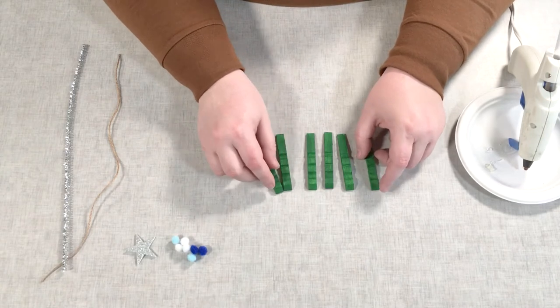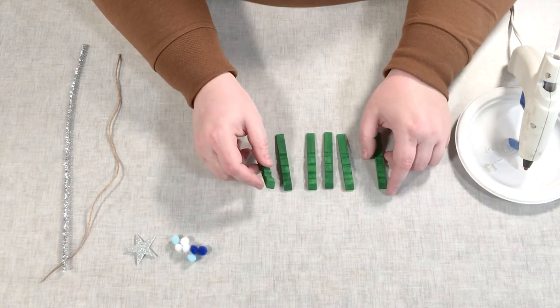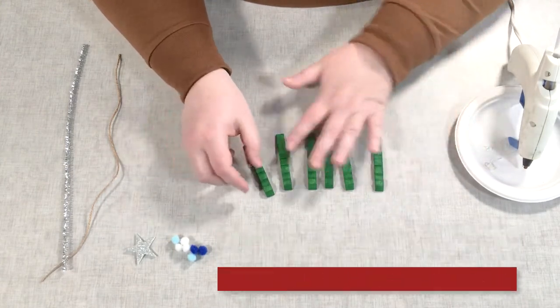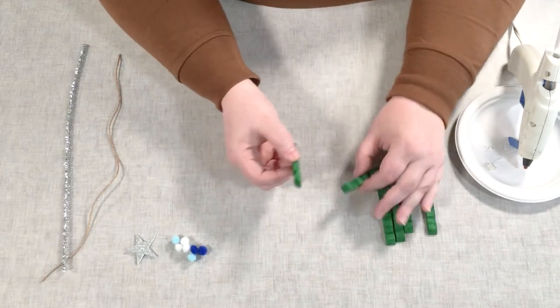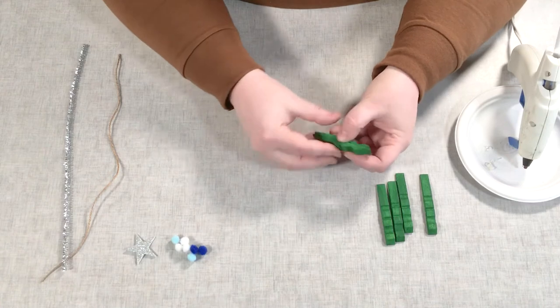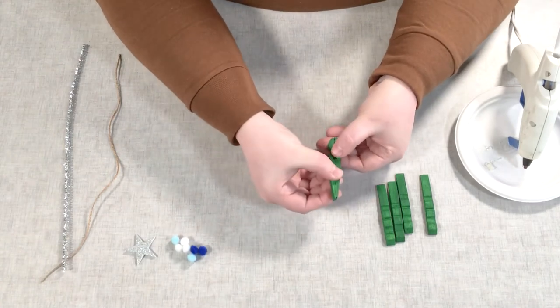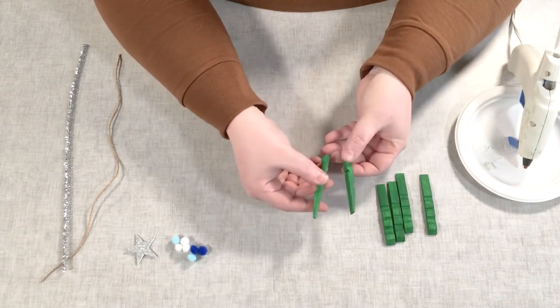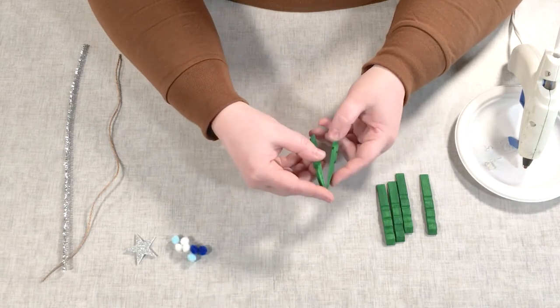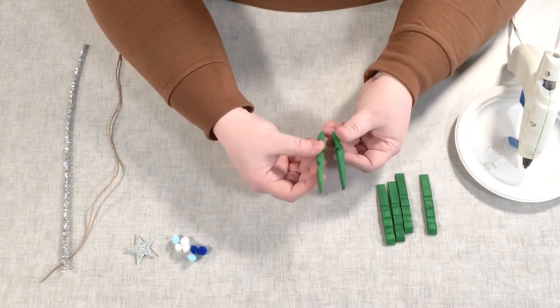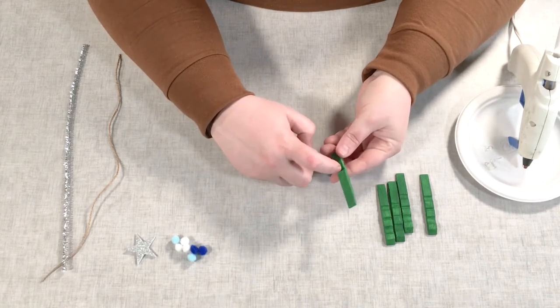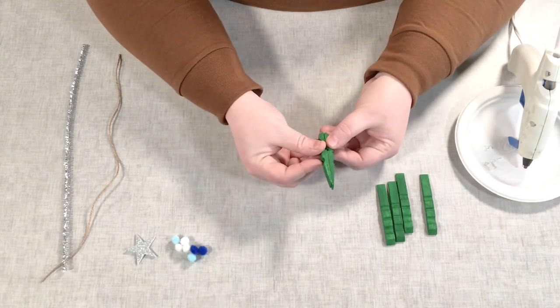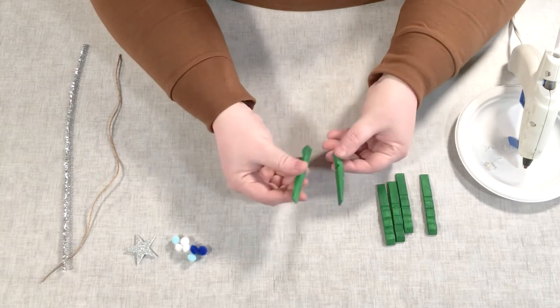Once you have those painted, you're going to glue two pieces of the clothespin together flat side to side. So you're going to take two of those pieces and they're going to fit together just like this. So the thinner pieces will be at the top, the pointy or thinner edges, and the curvier part where you have the place where the spring was is going to be at the base.